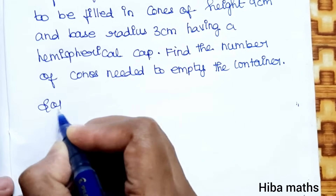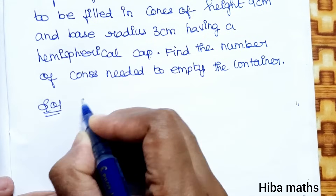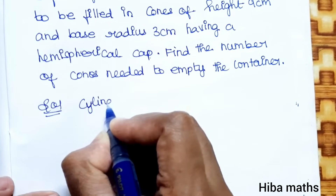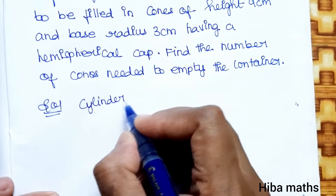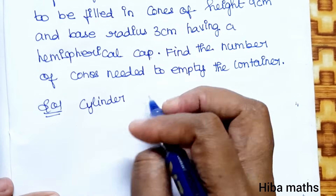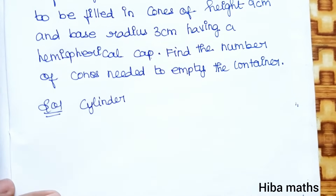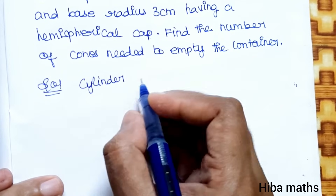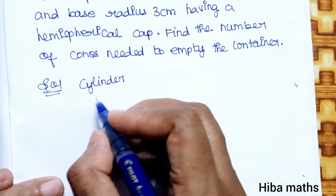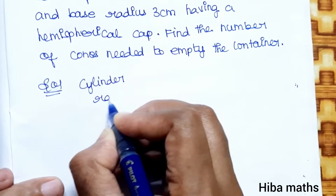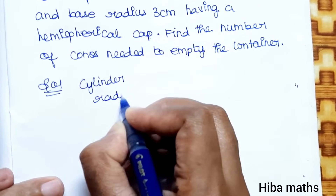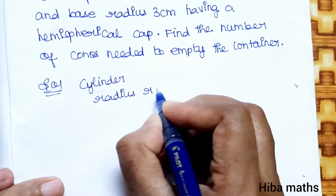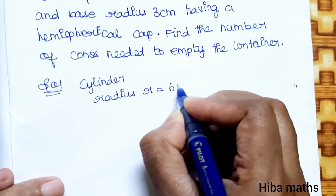Solution. Right circular cylinder: radius = 6 centimeter.